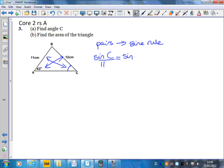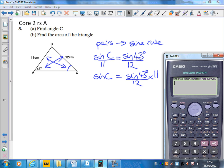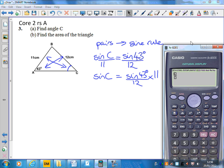Equals sine of the angle A there divided by its opposite side. That means sine C equals sine 43 degrees divided by 12 times 11. So then I can just go to my calculator.